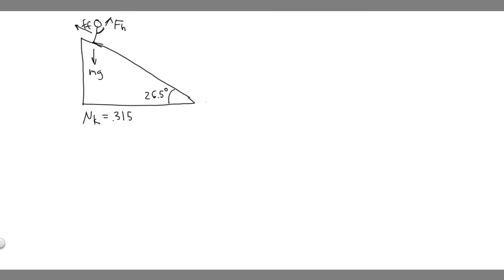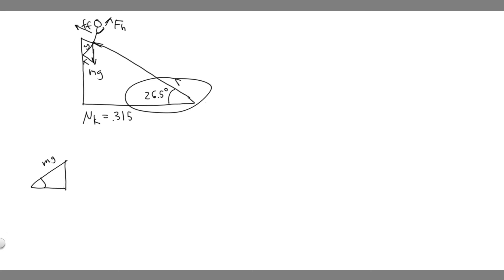The way we find the components is by drawing a triangle. Imagine the weight force mg is the hypotenuse of the triangle. The angle of the triangle is the same as the angle of the incline, which is 26.5 degrees. We're trying to find x, which is opposite to the angle, and y, which is the adjacent side — these are the x-component and y-component of the weight force.